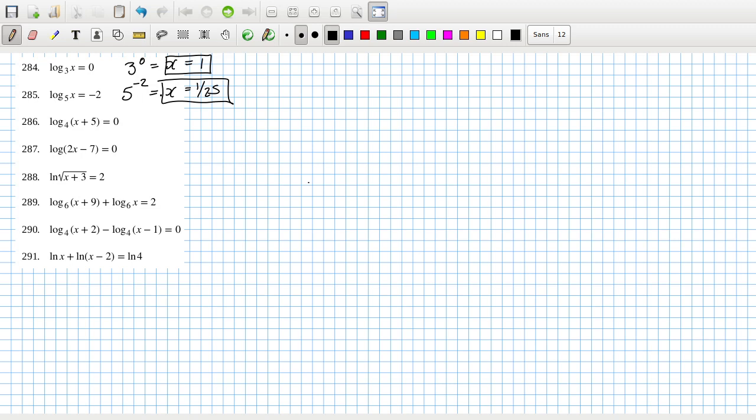286 yep, 285 I thought it okay. So 286, that's 4 to the power 0 equals x plus 5, so x plus 5 equals 4 to the power 0 is 1, so that means x equals minus 4.